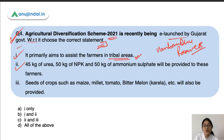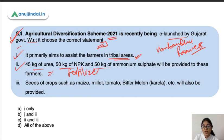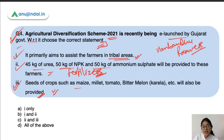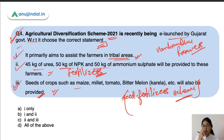Second, under this scheme, 45 kg of urea, 50 kg of NPK, and 50 kg of ammonium sulphate will be provided to these farmers — this is also correct, as fertilizer assistance is given. Third, seeds of crops such as maize, millet, tomato, bitter melon, etc. will also be provided — this is also correct. This scheme is basically a seed and fertilizer assistance scheme.